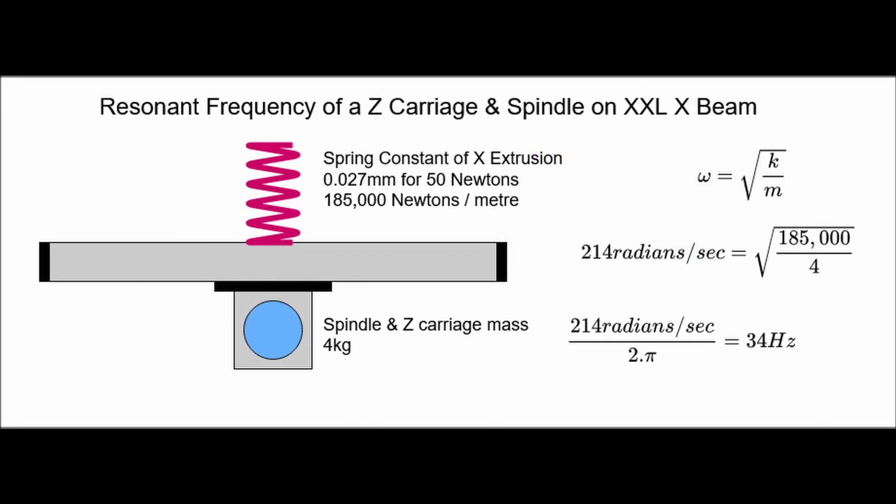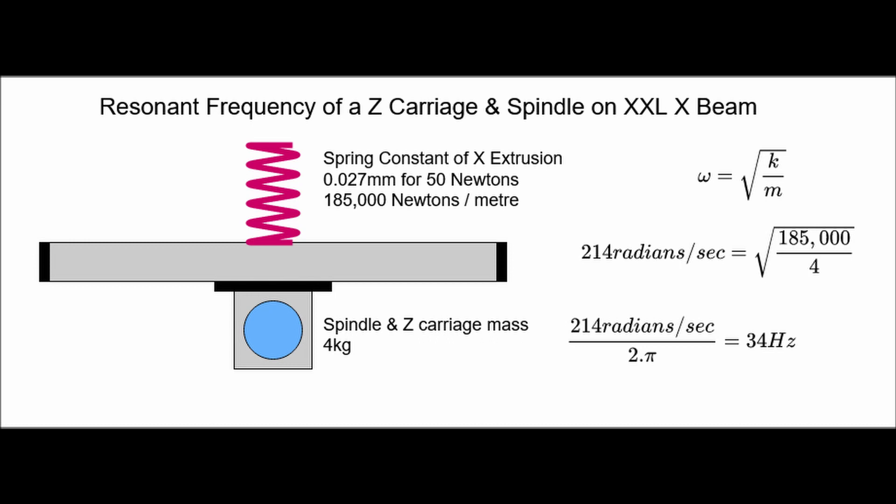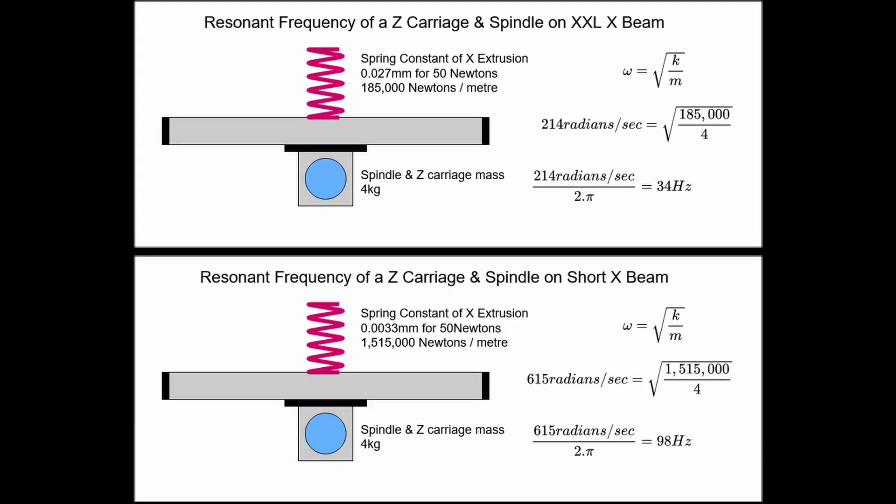Digging a little further we find the source of one of the large differences between the standard sized Shapeoko 3 and the XXL machine. Taking the X-beam rigidity for the XL and XXL, which we look at later on, and using this as the spring for the Z carriage assembly vibrating backward and forward this time, we see that we have a resonant frequency of about 34Hz. However, if we take the standard sized Shapeoko 3 with the shorter X-beam, we have a much smaller deflection for the same force. This higher spring constant gives us a resonant frequency almost three times higher than the long X-beam and suggests that the trigger feeds and speeds for this mode would be quite different on the standard sized machine.